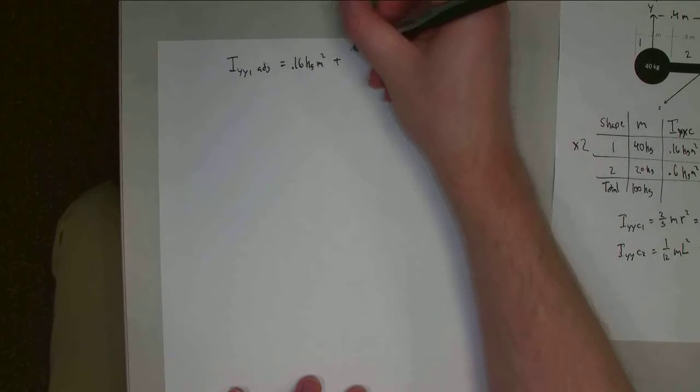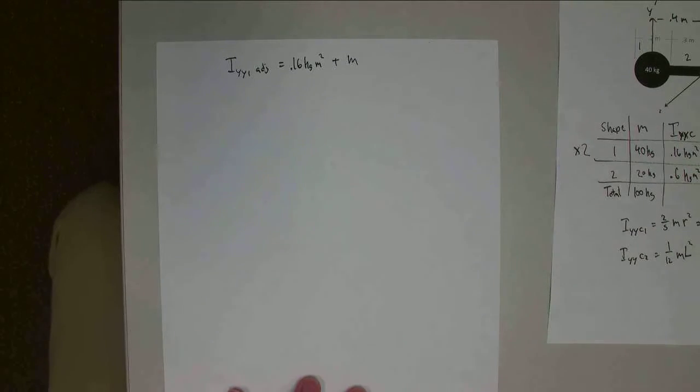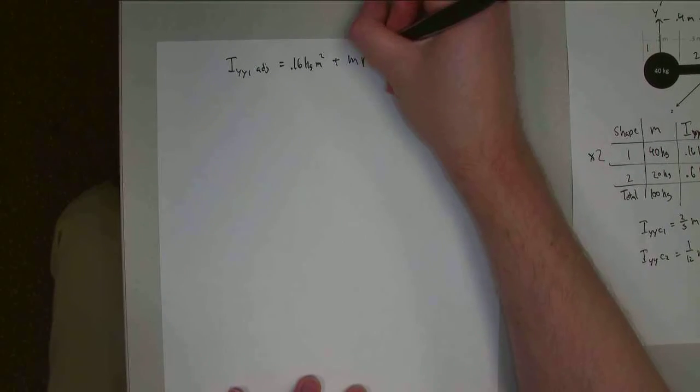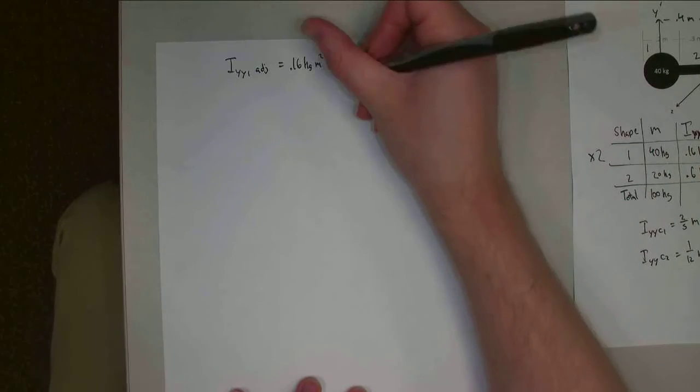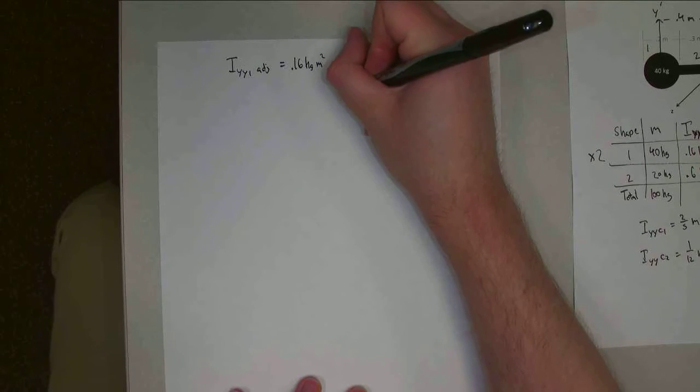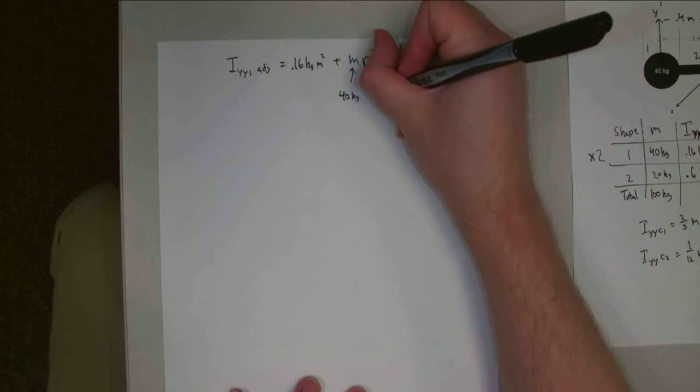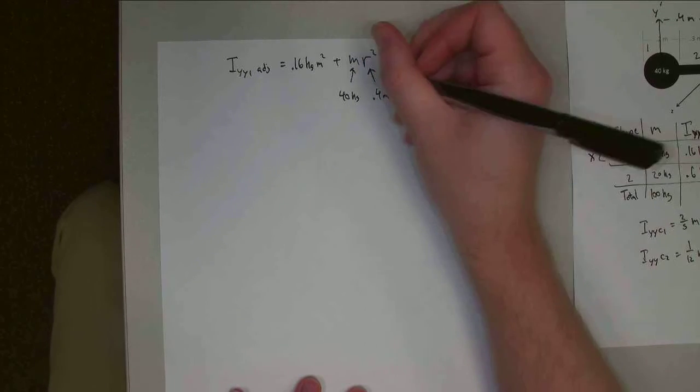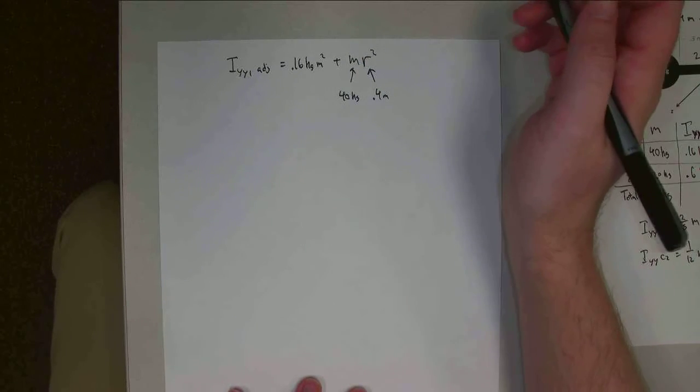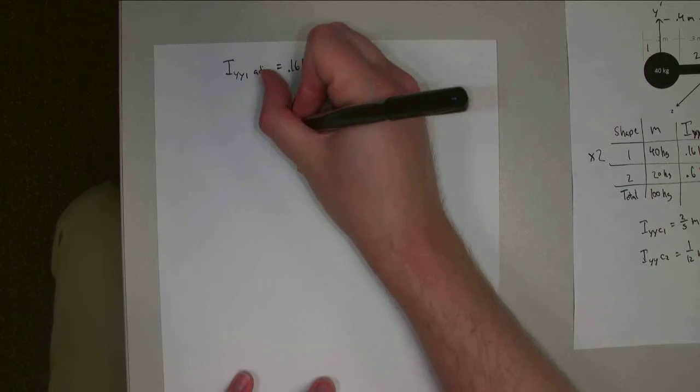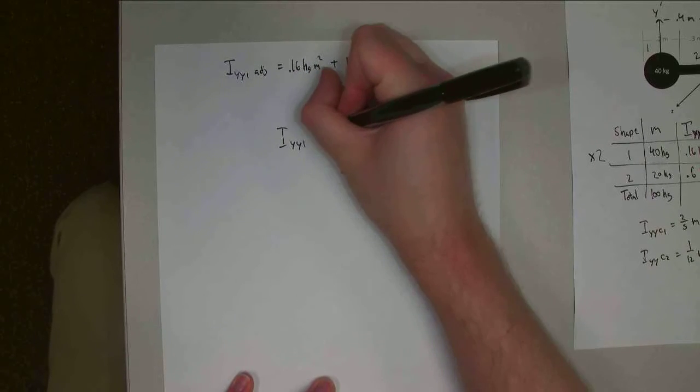Plus m r squared. All right, so m is 40 kilograms. And r is 0.4 meters. So if I plug in those values, my adjusted Iyy1 adjusted is going to be 6.56 kilogram meters squared.